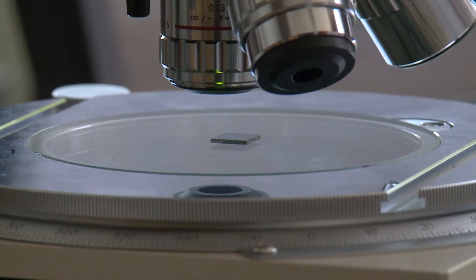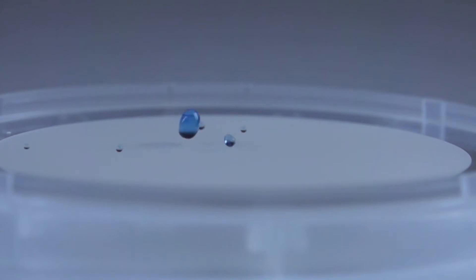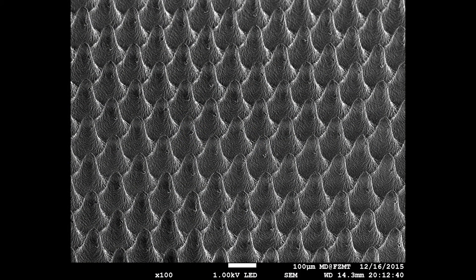One research focus at the Joseph Ressel Center is the production of functional surfaces. This means that a surface is changed in such a way that, for example, water drips off at certain positions. It becomes super hydrophobic, similar to a lotus flower.